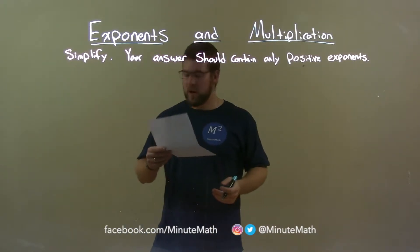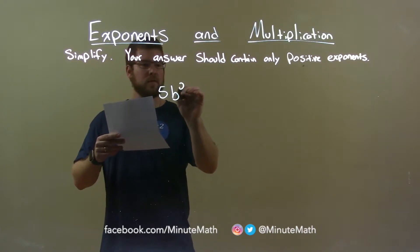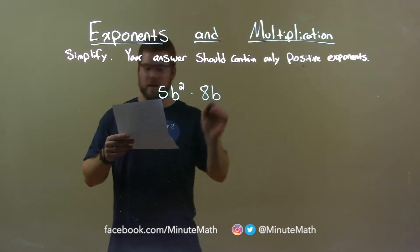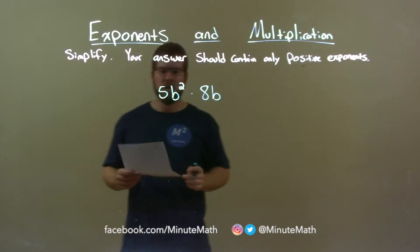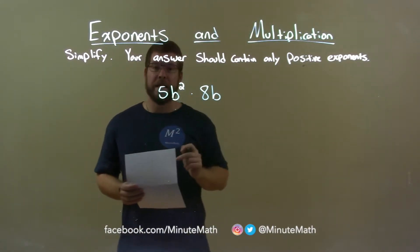If I was given this problem, 5b squared times 8b, well, we first have to multiply the coefficients. That's 5 and 8. 5 times 8 is 40.